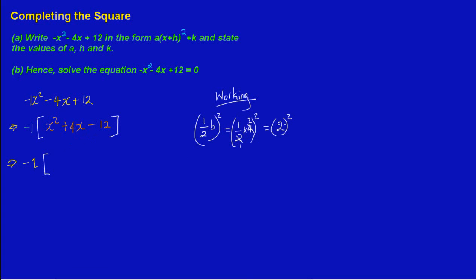I'm going to add 2 squared to the middle term, which is 4x, and then subtract it from the end term, which is positive 12. So I'm rewriting this as: x squared plus 4x plus 2 squared minus 12 minus 2 squared, then closing my bracket.